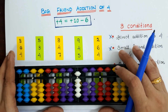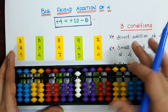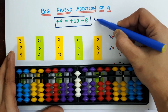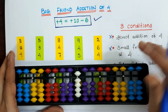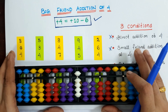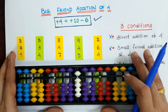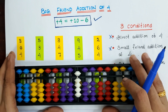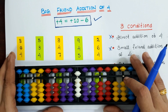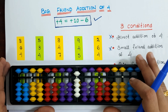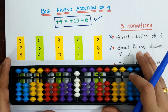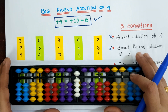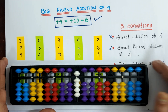In these two conditions we can apply the big friend addition of 4, which is plus 4 equals plus 10 minus 6. Now let's see how we can apply this formula. We will solve 10 examples.